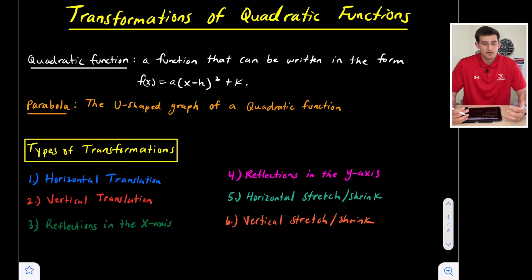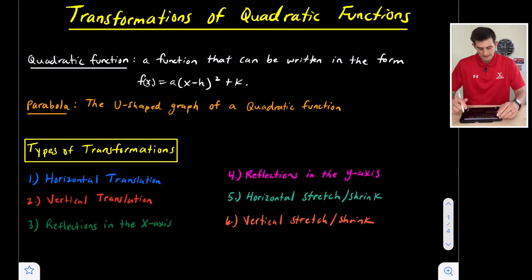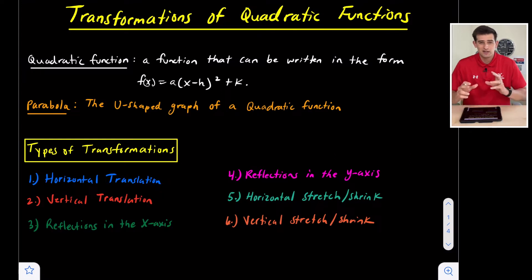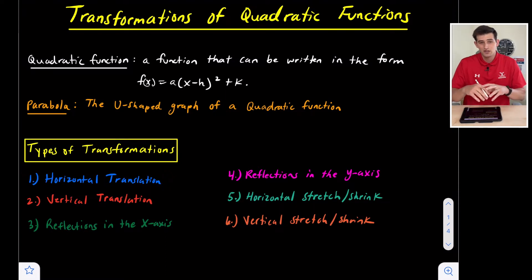Once we graph a quadratic function, the shape it gives us is a parabola — that's our u-shaped graph, which can open up or open down. In this video we're going to talk about six transformations, look at an example for each one, and see how we can identify the transformation from the equation and also what it looks like in the graph.